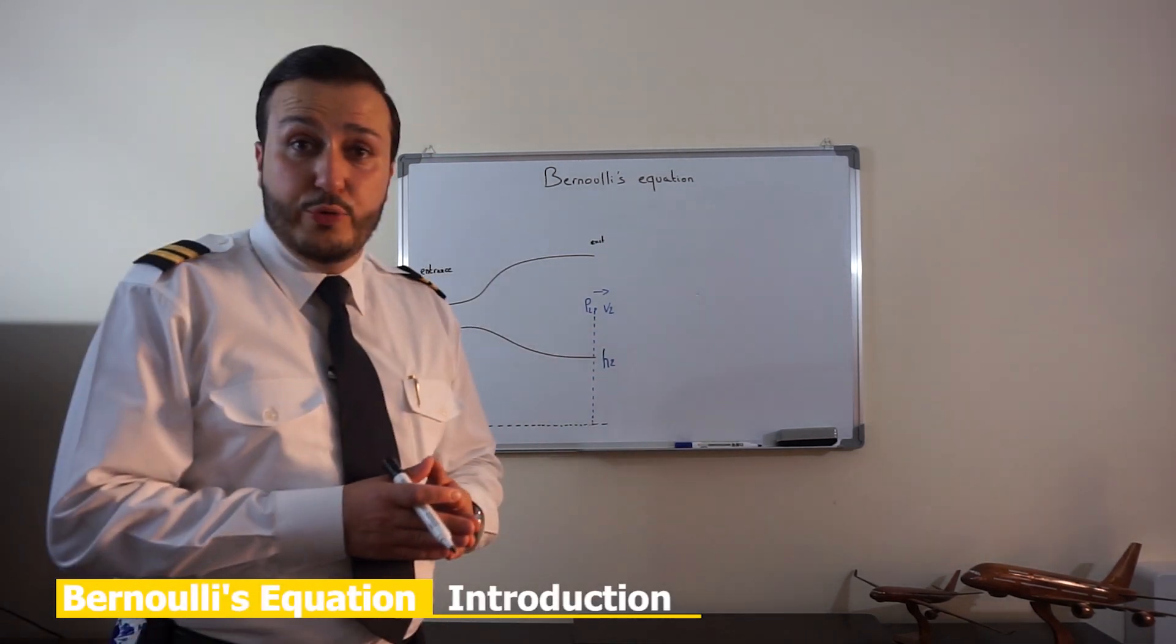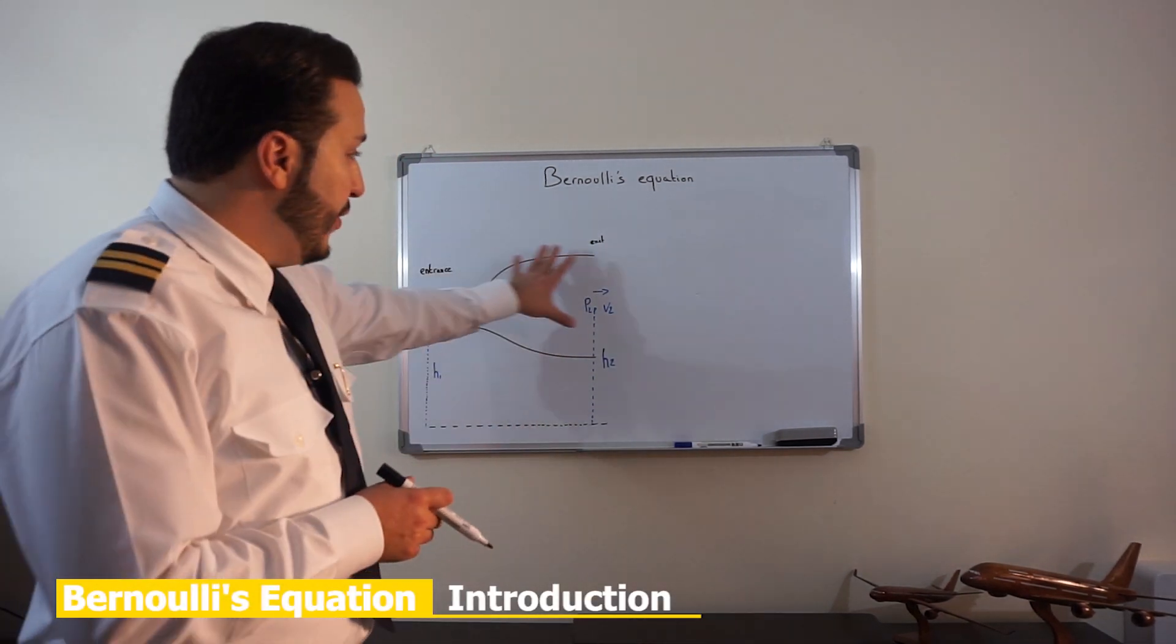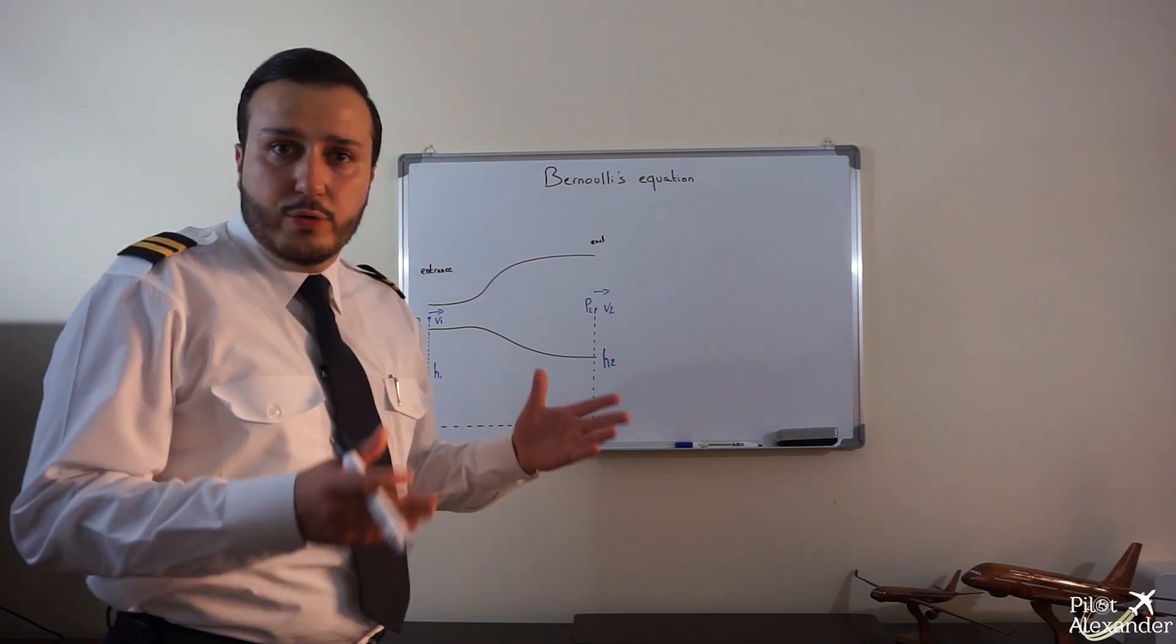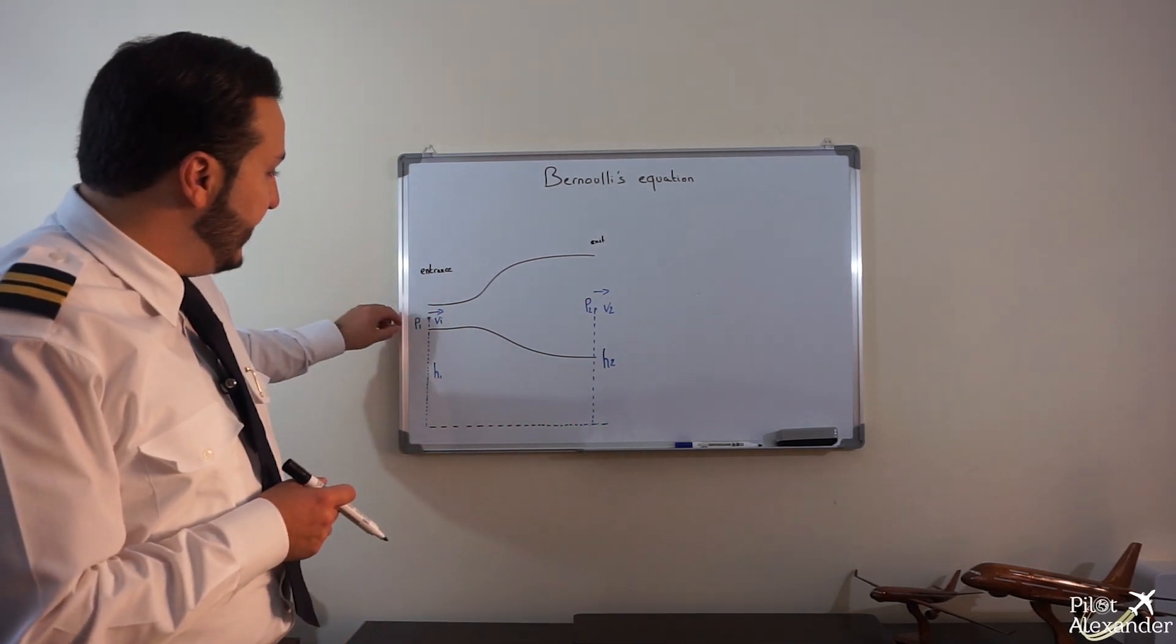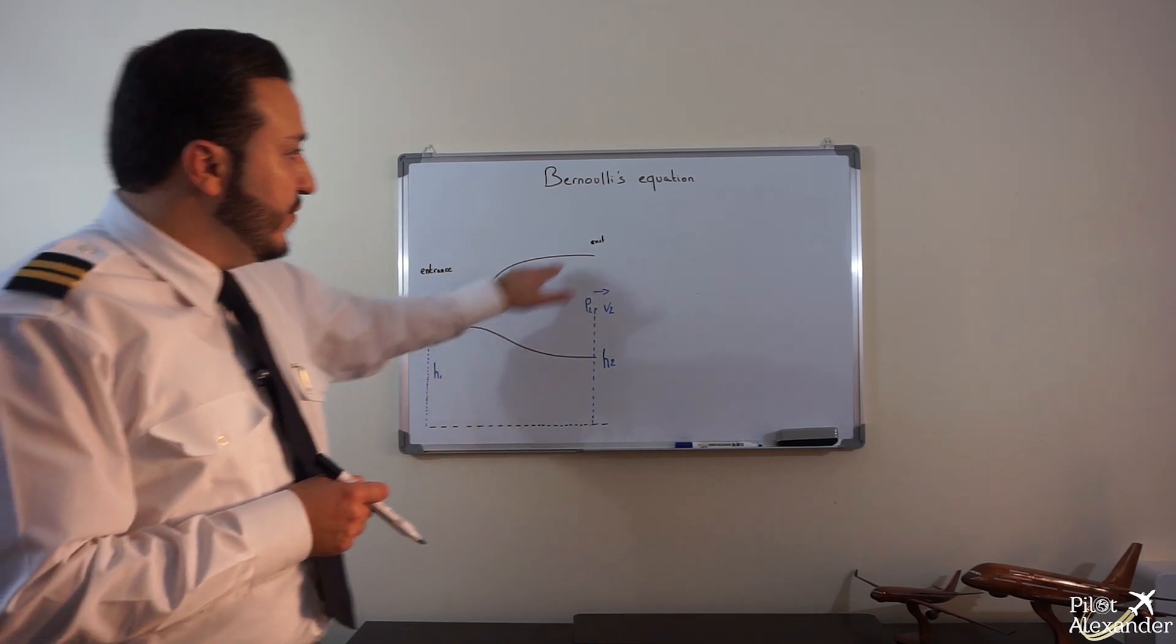So this is Bernoulli's equation regarding fluid flow. Basically, I've drawn here for you a pipe or a tube, and we can imagine that a fluid is going from the entrance here to the exit.